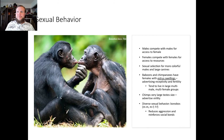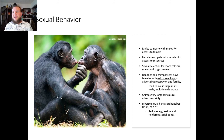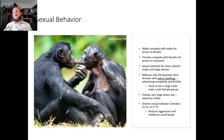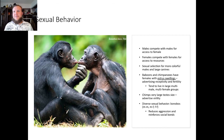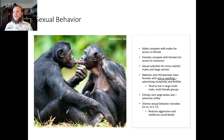Sexual behavior: males compete with males for access to females, and females also compete with females for access to resources for their offspring. This is sexual selection at work, leading to more colorful males with larger canines for fighting. Baboons and chimpanzees also have females with sexual swellings that advertise receptivity and fertility — the result of living in multi-male, multi-female large groups. In terms of sexual competition, chimps also have very large testes for sperm competition. Bonobos are known as the lovers because they solve everything through sex — it reduces aggression and reinforces social bonds.